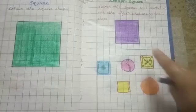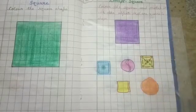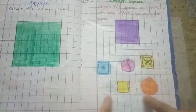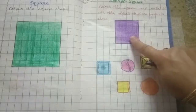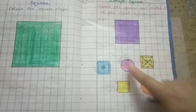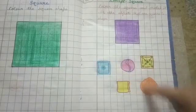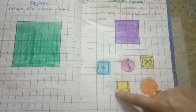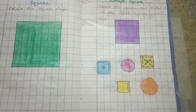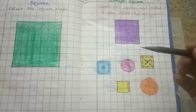See kids, there are some objects of different shapes. Now, we will match this square with the objects that are square in shape. Okay. So, take out your pencil.